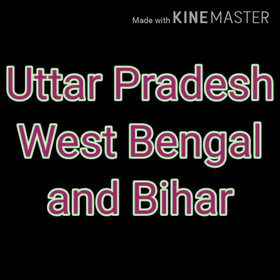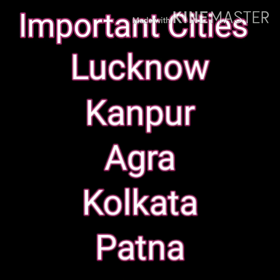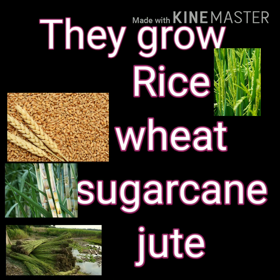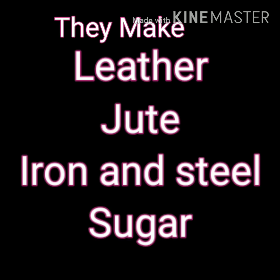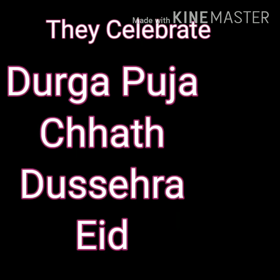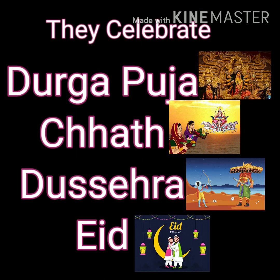Next we have Uttar Pradesh, West Bengal and Bihar. Important cities of these states are Lucknow, Kanpur, Agra, Kolkata and Patna. People here grow rice, wheat, sugarcane and jute. Industries include leather, jute, iron and steel, and sugar. Festivals celebrated include Durga Puja, Chhath, Dussehra and Eid.